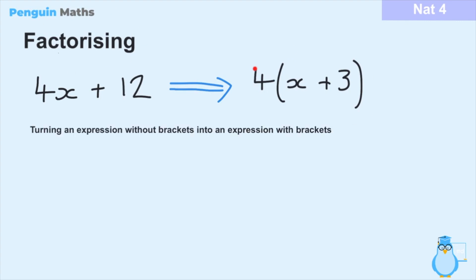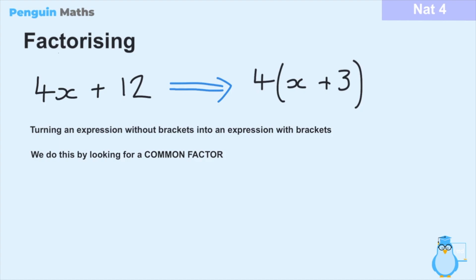When we were multiplying out the bracket we would end up with the expanded expression — that was the answer. But now imagine we're starting with the answer and we have to work back to what the original question was by putting it back into brackets, and once again this is called factorising. The reason it's called factorising is because in order to do this we have to look for a common factor between each of the variables within the expression.